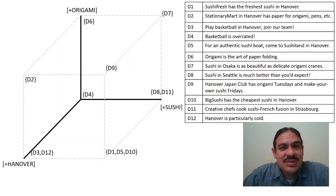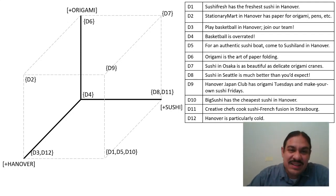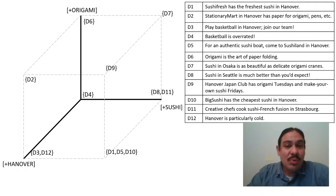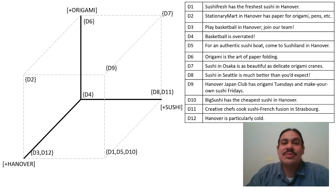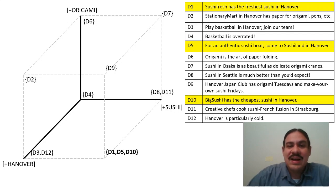With this description, we can plot the position of each document in our three-dimensional system. D4 ('Basketball is overrated') is at 0,0,0, right at the center. D9 is at 1,1,1, floating above the plane. Most importantly, you can see that documents have begun to cluster: D1, D5, and D10 — the ones about sushi restaurants in Hanover — cluster together at 1,1,0. There are other clusters too, like D8 and D11. D1, D5, and D10 are clustering together because they have the same description in the feature system.